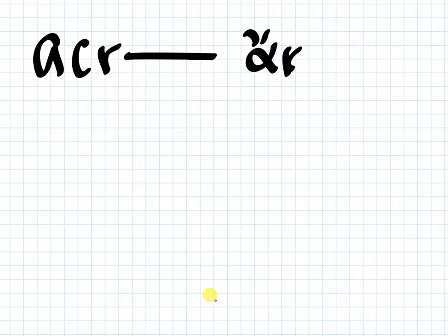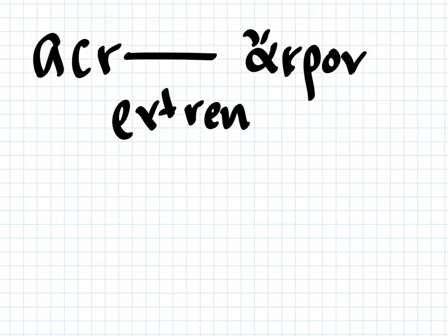So first we're going to go over is Acre. And we've got Acron in Greek. So this is going to be like an extreme portion. And so when you say extreme, this means not like politically extreme, but like very close to the top or to an edge or something, an extreme in position.